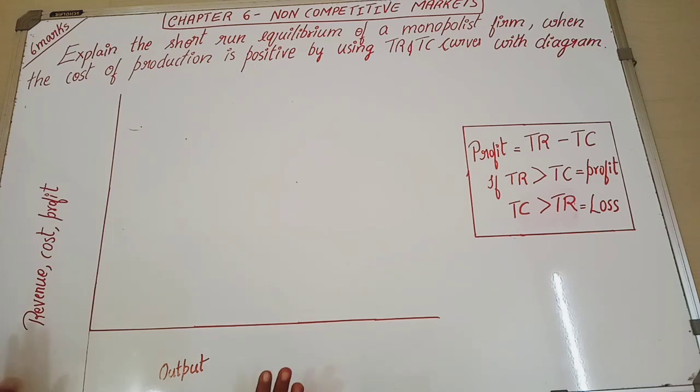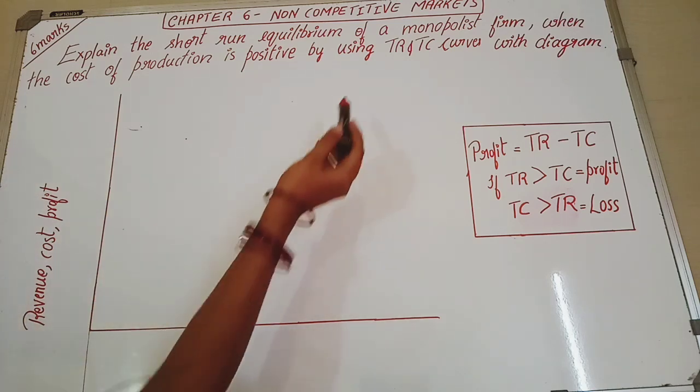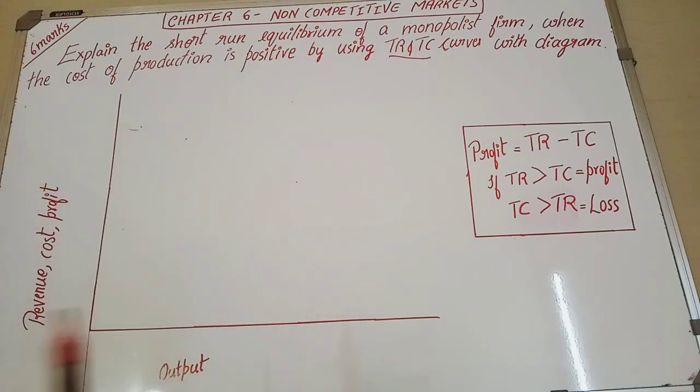So first what we have to do is, we are going to make a graph. In the graph, x-axis we mark the output and y-axis we mark the revenue, cost and the profit. So since our question itself is about TC and TR curves. What is TC and TR curves? Total revenue and total cost curves. So first we shall draw these two curves.